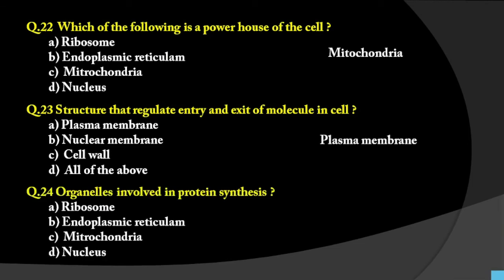Question number 24: Organelles involved in protein synthesis. Options are ribosome, endoplasmic reticulum, mitochondria, or nucleus. The answer is ribosome, because ribosome is also called the protein factory of the cell.